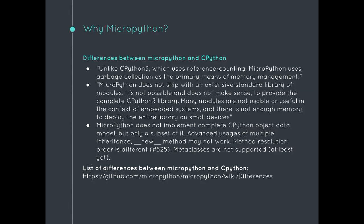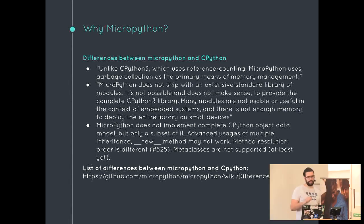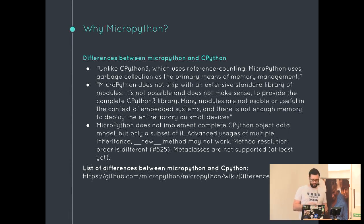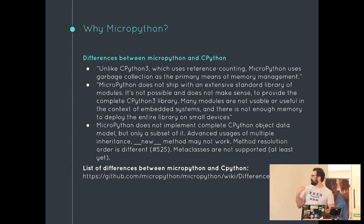Some of the other differences: it's got its own garbage collector versus the normal reference counting. Classes and objects are not 100% implemented like CPython 3. MicroPython isn't Python — it's an implementation based on CPython 3, so it's familiar, but you will find differences if you go through the process.